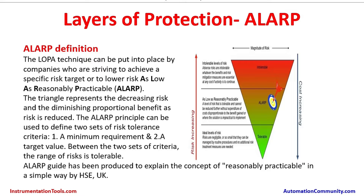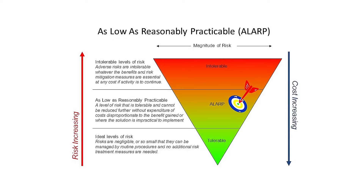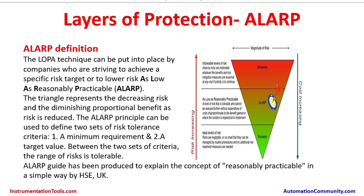In this triangle, risks keep increasing as the plant gets older. When we want to achieve the tolerable zone — the green zone — that is the ideal level of risk. Risks are so small that they can be managed by routine procedures, and no additional risk treatment measures are needed. This is the most preferred zone, known as tolerable.